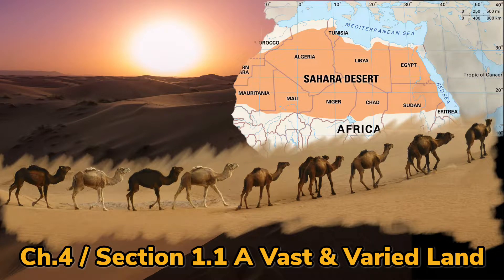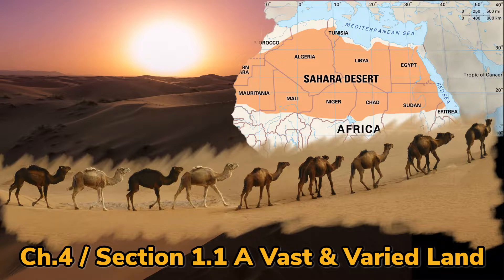Today we start our lesson in Chapter 4, and we are in Section 1.1: A Vast and Varied Land. In this unit lesson, we will learn about the continent of Africa by chapter in terms of sections, and we will learn about North, West, East, and Southern parts of Africa.